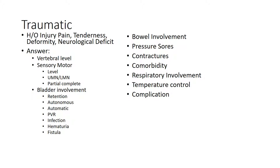Whenever you have a traumatic spine with or without neurological involvement, you must determine the vertebral level, examine the sensory and motor system, determine the level of involvement, determine whether it is upper motor neuron or lower motor neuron, and whether it is partial or complete.